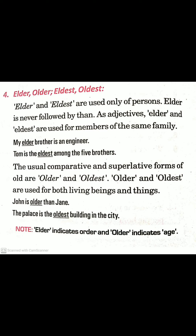'Elder' and 'eldest' are used only of persons. 'Elder' is never followed by 'than.' As adjectives, 'elder' and 'eldest' are used for members of the same family. Like: 'My elder brother is an engineer.' 'Tom is the eldest among the five brothers.' The usual comparative and superlative forms of 'old' are 'older' and 'oldest.' These are used for both living beings and things. Like: 'John is older than Jane.' 'The palace is the oldest building in the city.' 'Elder' indicates order, and 'older' indicates age.